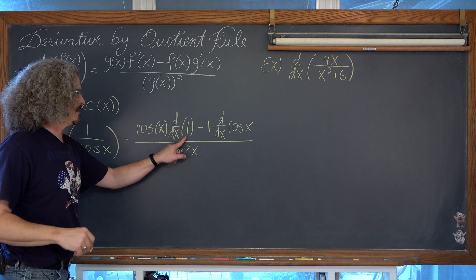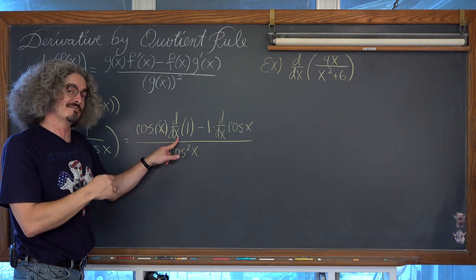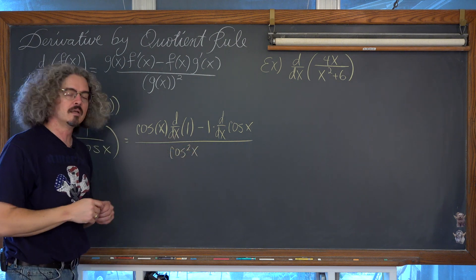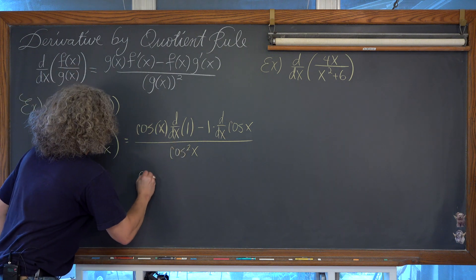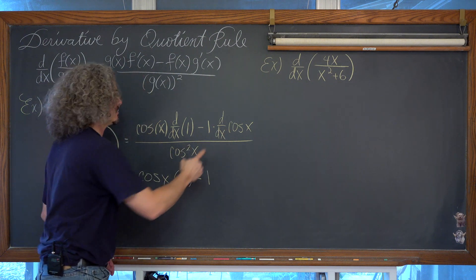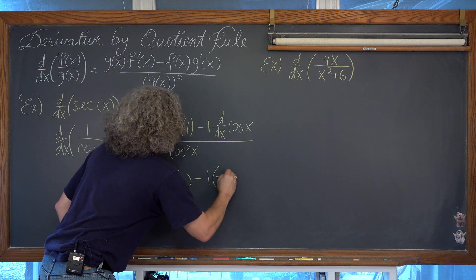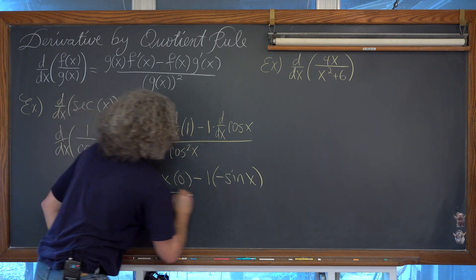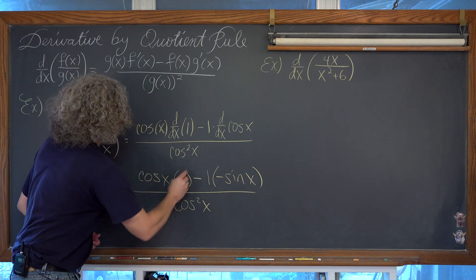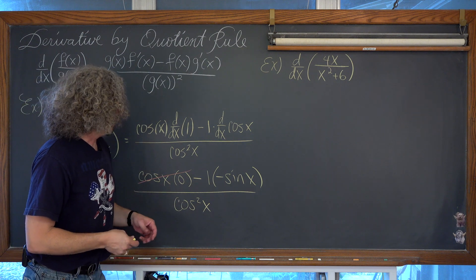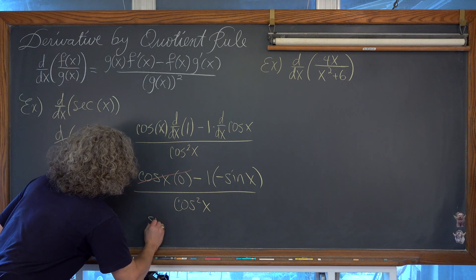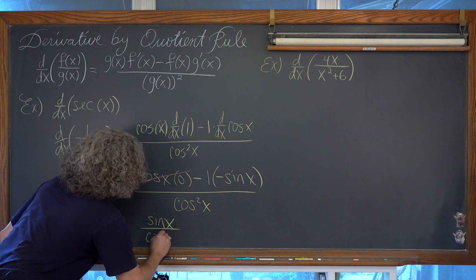So what do we have here? The derivative of a constant is equal to zero — the slope of the horizontal line y equals 1 is zero. So we have cosine of x times zero, minus one times the derivative of cosine of x, which is negative sine of x, all over cosine squared of x. Obviously anything times zero is zero and when you add or subtract zero nothing happens. Then we have negative one times negative sine, which gives us positive sine of x over cosine squared of x.